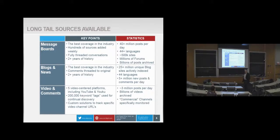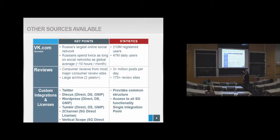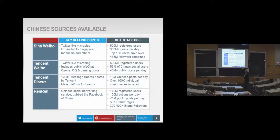Here's an example: a company called Board Reader — now renamed Social Gist — processes 40 million posts a day from 500,000 sites including message boards, blogs, and news. They also gather data from VK in Russia, Weibo, Tencent, and other platforms in China. This data from every country is funneled in, processed, and made available to you in a matter of minutes from anywhere on the globe.